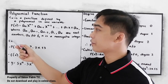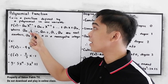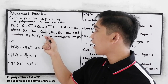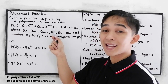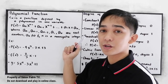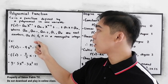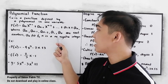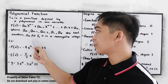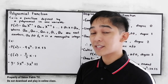It is written in the form p(x) = a-sub-n times x raised to n, minus a-sub-(n-1) times x raised to n-1, plus the ellipsis sign, plus a-sub-1 times x, plus a-sub-0, where a-sub-n, a-sub-(n-1), a-sub-(n-2), a-sub-1, and a-sub-0 are real numbers.